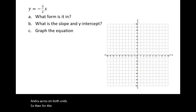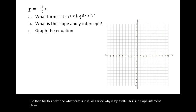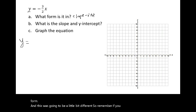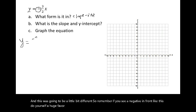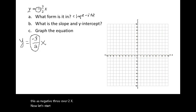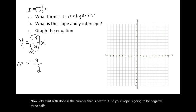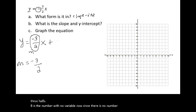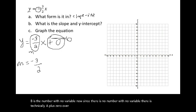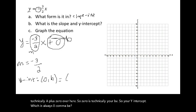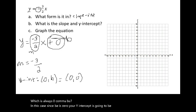For the next equation: y is by itself, so this is in slope-intercept form. Since there's a negative in front, put the negative with the numerator, writing it as negative 3 over 2x. The slope is the number next to x, so slope equals negative 3 halves. b is the number with no variable — since there is none, b is 0. The y-intercept is (0, 0), the origin.